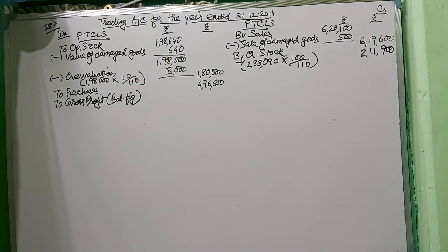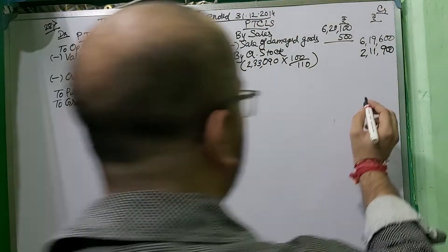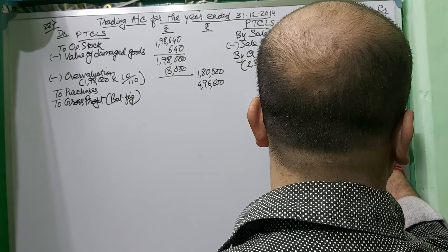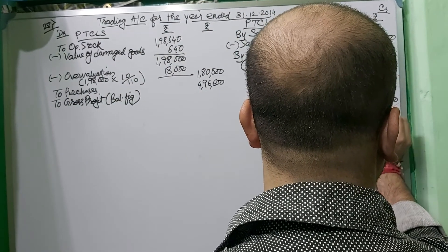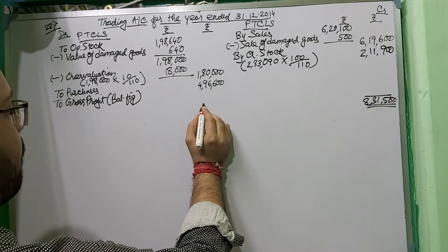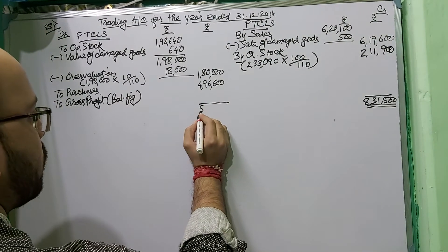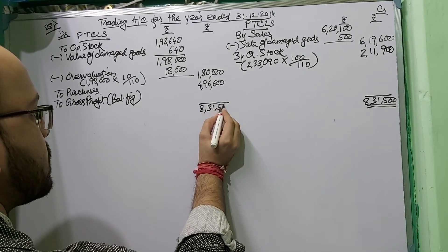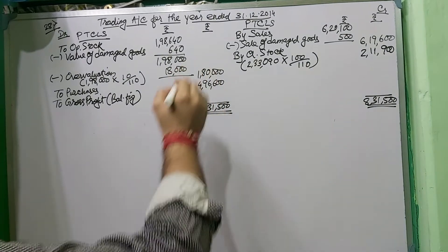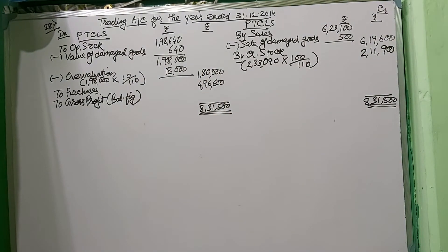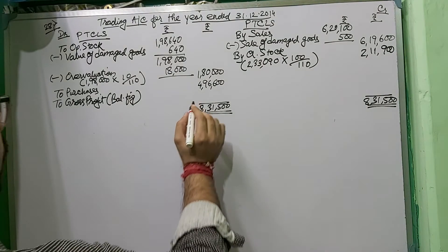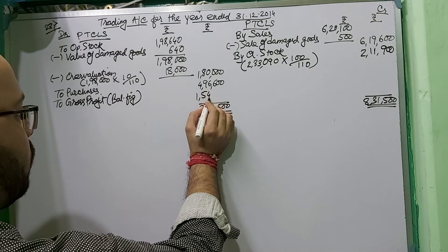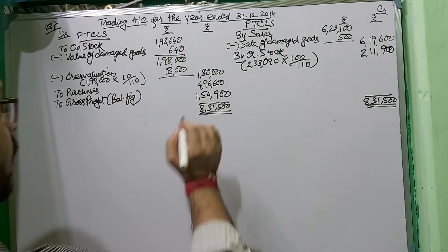The total of the trading account comes to ₹8,31,500. Deducting opening stock ₹1,80,000 and purchases ₹4,96,600 from ₹8,31,500, the gross profit is ₹1,54,900.